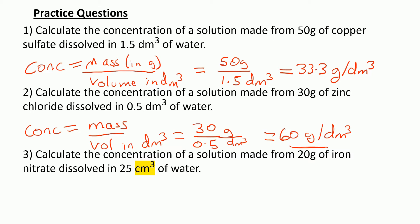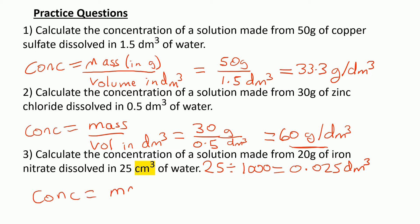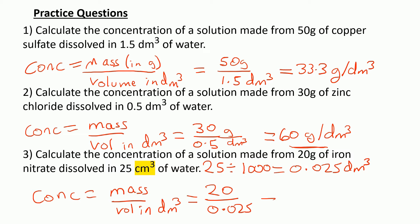For question three, I've highlighted the cm cubed to remind you that we need to convert it first — in your exam paper that won't be highlighted, so make sure you look out for that. The conversion: 25 divided by 1000 equals 0.025 dm cubed. Now using the equation: concentration equals mass divided by volume in dm cubed — 20 divided by 0.025 — gives 800 grams per dm cubed.